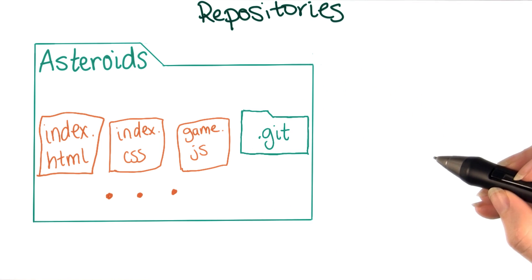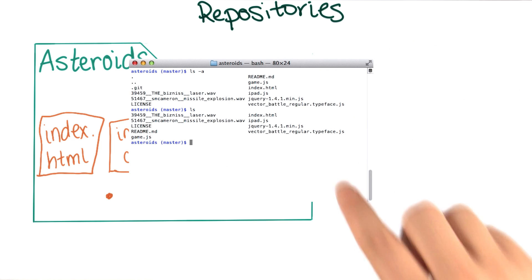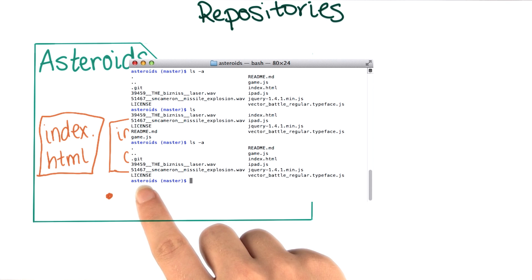One way to see these files is by going to the command line and using ls-a. In addition to all the normal files that you see when you type ls, when you do ls-a, you also see the hidden files.